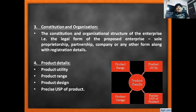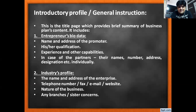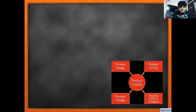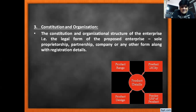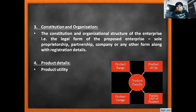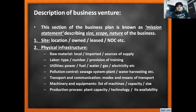So when we talk about the first part — the industry profile or general introduction — we have covered four areas: entrepreneur's bio data, industry profile, constitution and organization, and product details. Now we are quickly moving towards the second part, which is called the description of the business venture.